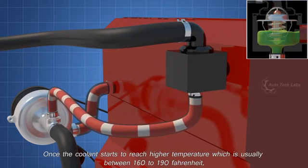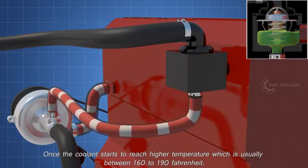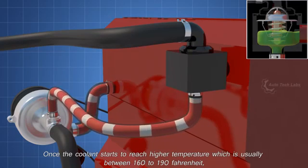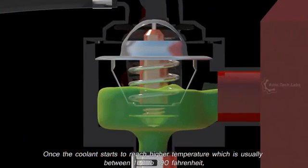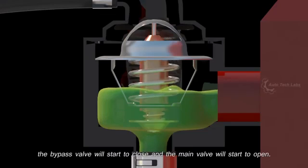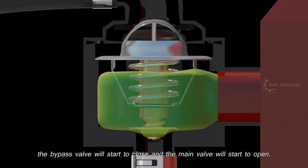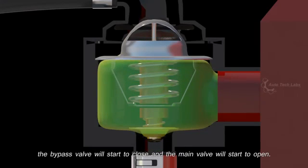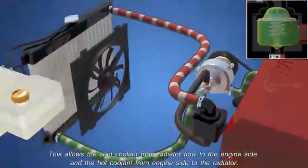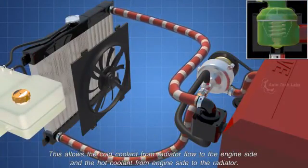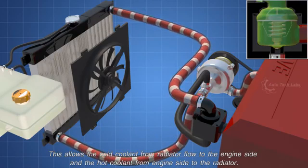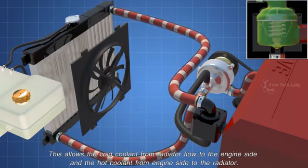Once the coolant starts to reach higher temperature, which is usually between 160 to 190 Fahrenheit, the bypass valve will start to close and the main valve will start to open. This allows the cold coolant from radiator flow to the engine side, and the hot coolant from engine side flow to the radiator.